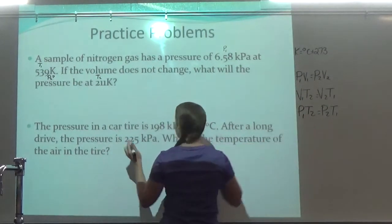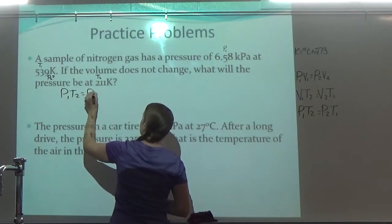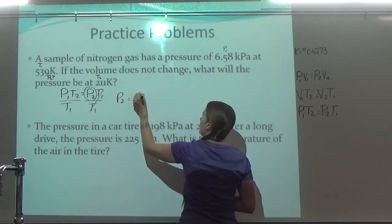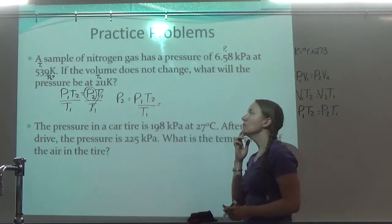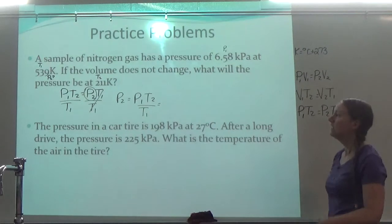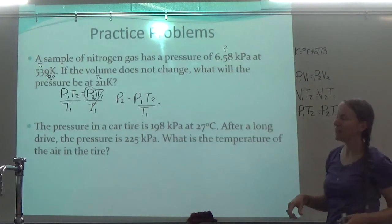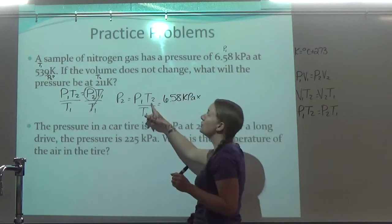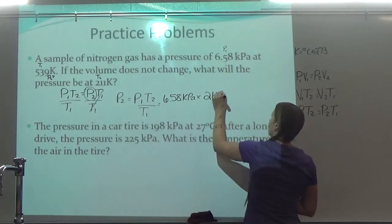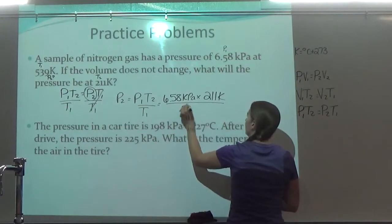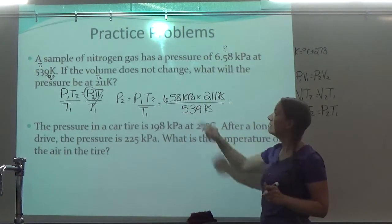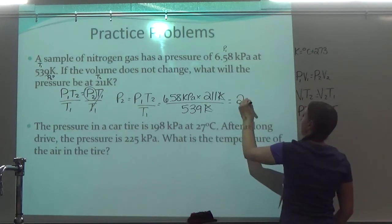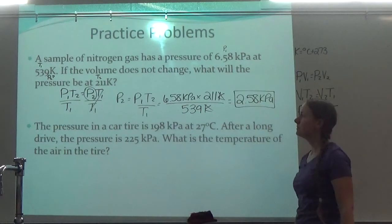I see I'm dealing with P's and T's, so I know I'm using Gay-Lussac's Law. So it's P1 T2 equals P2 T1. I'm solving for P2, so to get it by itself I divide both sides by T1, giving me P1 times T2 over T1. P1 is 6.58 kilopascals, times T2 — remember, not T1, T2 — which is 211 Kelvin, over T1 which is 539 Kelvin. My Kelvins cancel, I'm left with kPa, so I do 6.58 times 211 divided by 539, and I get 2.58 kilopascals. Hopefully you got that one right.